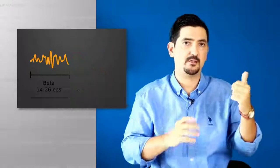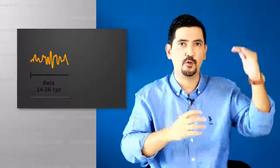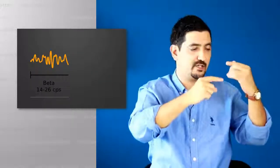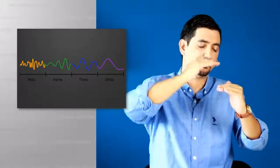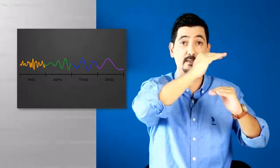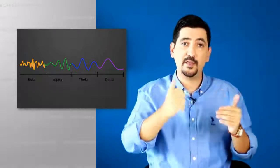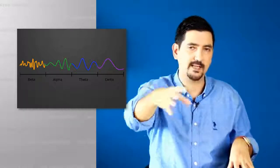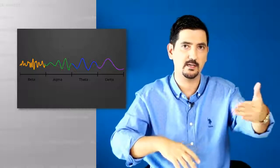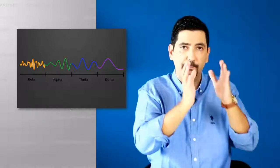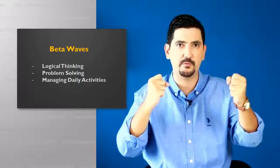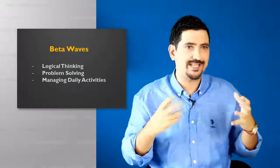These are like the frequency bands. So, we have beta. And beta is when your brain emits between 14 to 20 cycles per second of electrical impulse. Then we have alpha, which is between 7 to 14 cycles per second. Then we have theta and delta. And with delta, you go into deep sleep. Now, the beta waves are what gives us the logical thinking, the problem solving, managing our daily activities. Beta is like your management consultant.